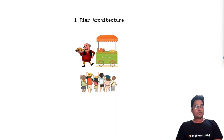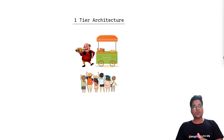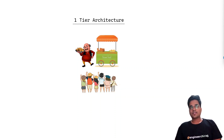There are multiple types of client-server architecture — 1-tier, 2-tier, 3-tier, and N-tier architecture — and we will be learning each by example.